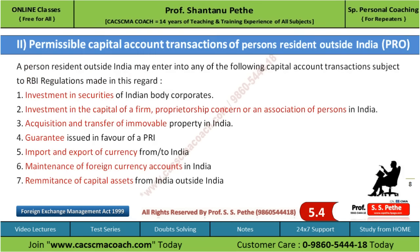Now in the second phase, we will see permissible capital account transactions of PRO - person resident outside India. PRO is also permitted for capital account transactions, but we need to see what those transactions are. A person resident outside India may enter into the following capital account transactions subject to RBI regulations. First, investment in securities of Indian body corporate. Second, investment in capital of a firm, proprietorship concern, or an association of persons in India. Third, acquisition and transfer of immovable property in India, subject to regulation.